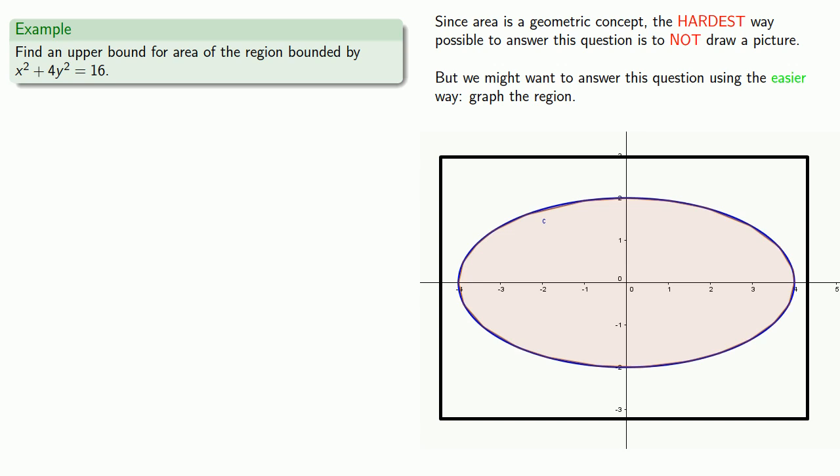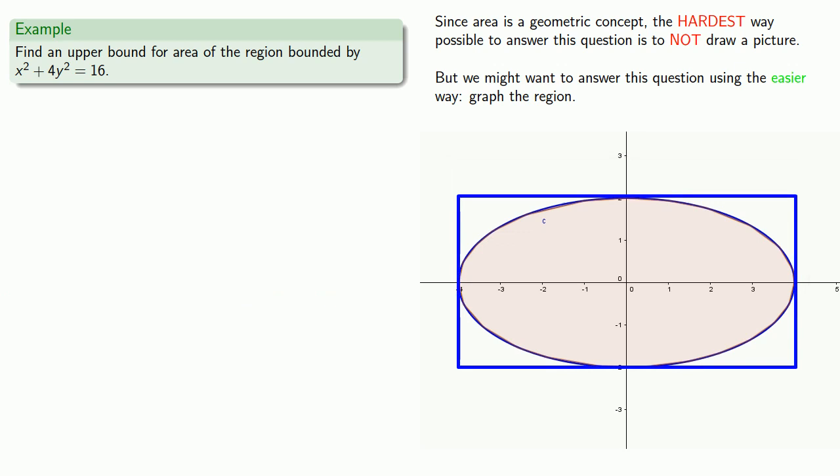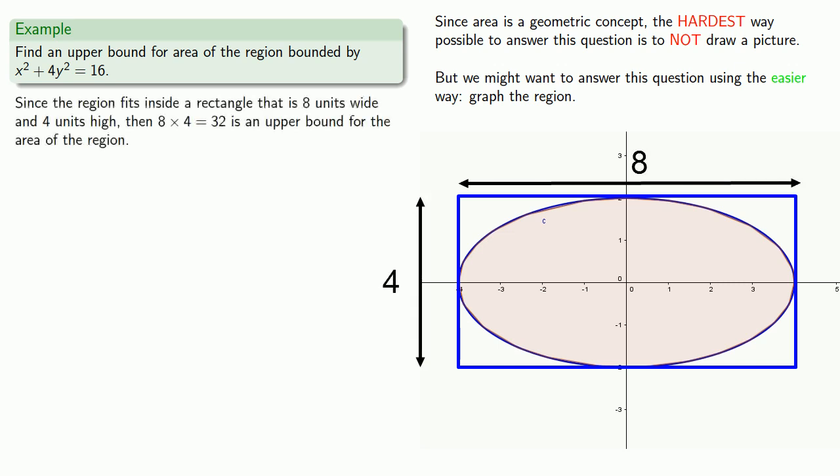But maybe we can do a little bit better. And this rectangle seems to be a good fit. The entire region fits inside a rectangle that's 8 units wide and 4 units high. So 8 times 4, or 32, is an upper bound for the area of the region.